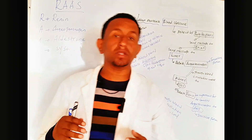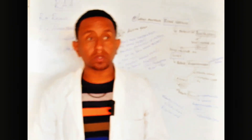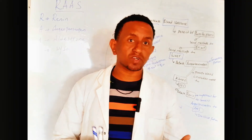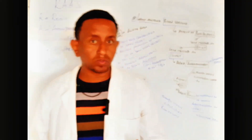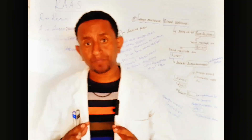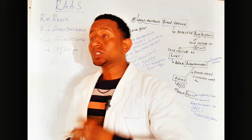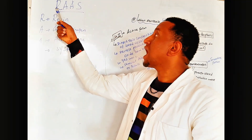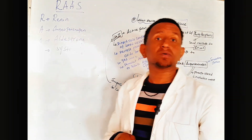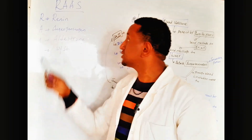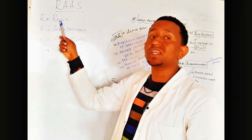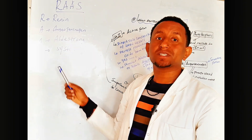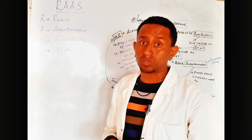So RAS System — R is Renin, Angiotensinogen, Aldosterone System — they are very very important.